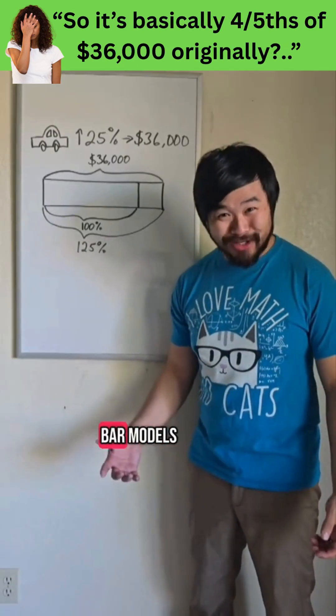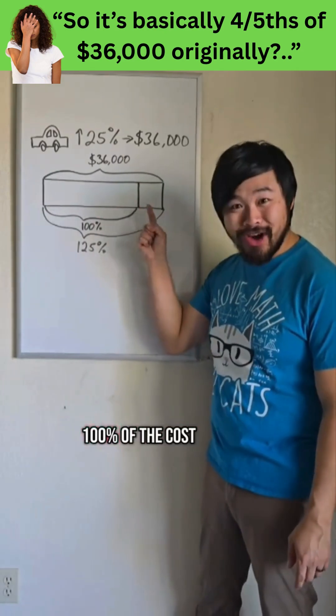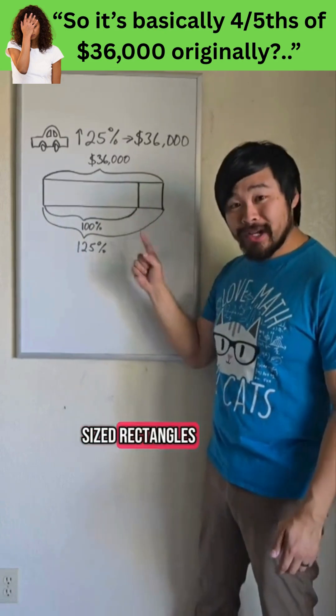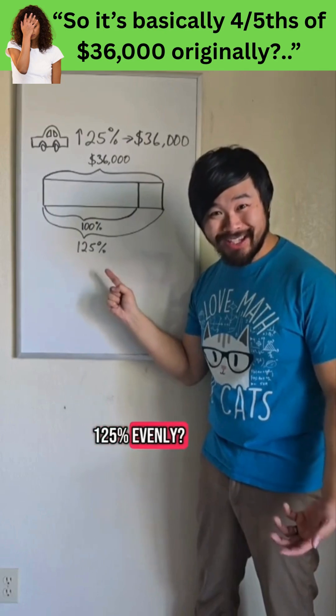So I love bar models. We have 125% of the cost and we want 100% of the cost. This would be easier if we have the same sized rectangles. So what percent can fit into both 100% and 125% evenly?